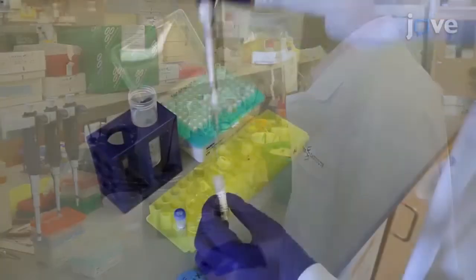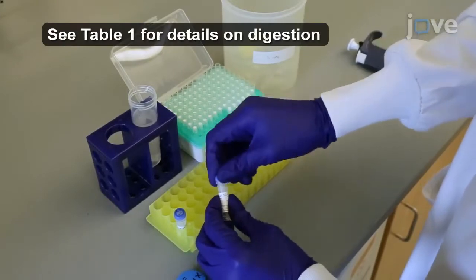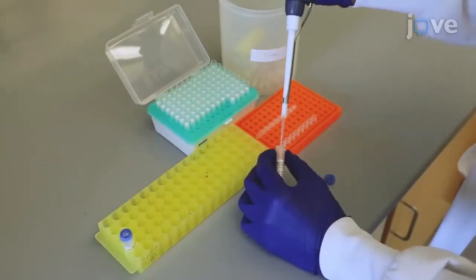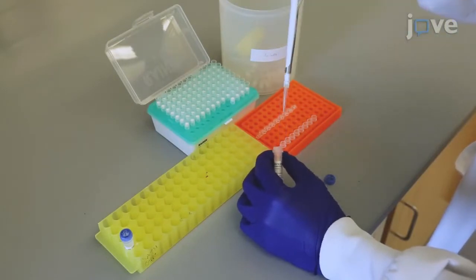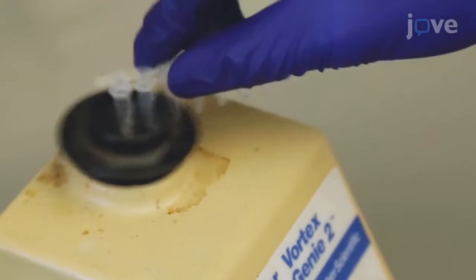To begin this protocol, dilute the lyophilized primers in one XTE buffer to a final concentration of 100 micromolar. Aliquot an equal amount of forward and reverse primers into PCR strip-capped tubes. Vortex to mix.